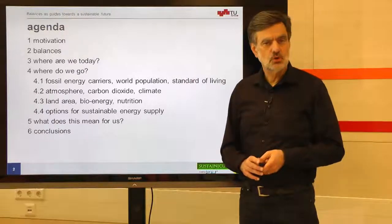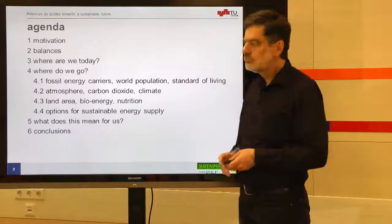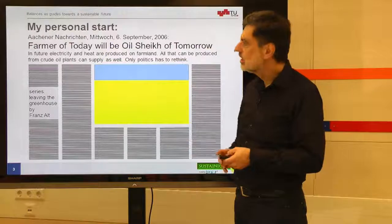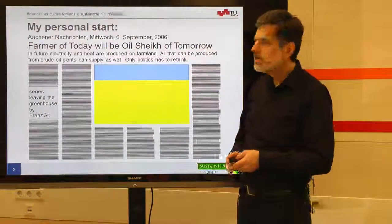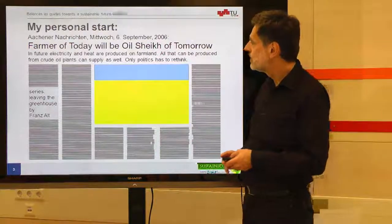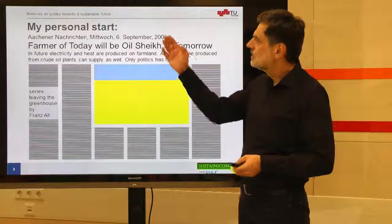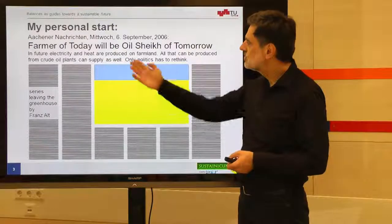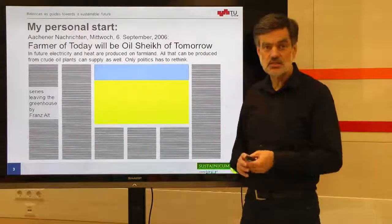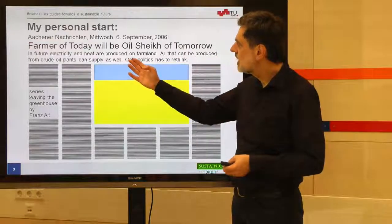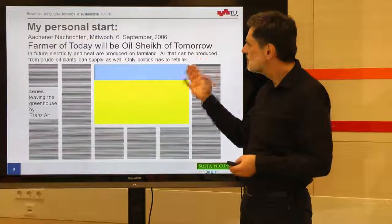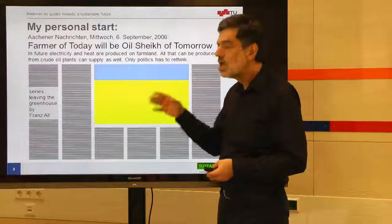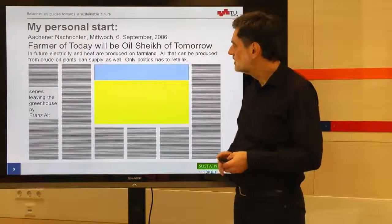Today let me start with motivation. For me the motivation actually was this article — I may not reproduce it because of copyright regulations, but I give the title. The title was "The Farmer of Today will be the Oil Sheikh of Tomorrow," published in September 2006 in a local newspaper. The subtitle read: "In future, electricity and heat are produced on farmland. All that can be produced from crude oil, plants can supply as well. Only politics has to rethink."